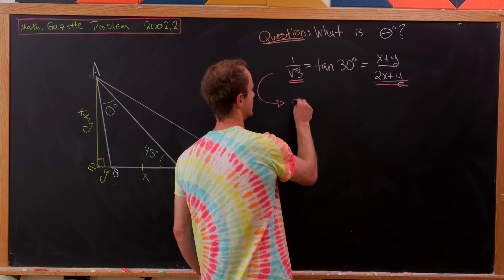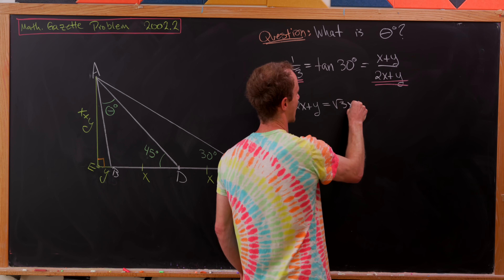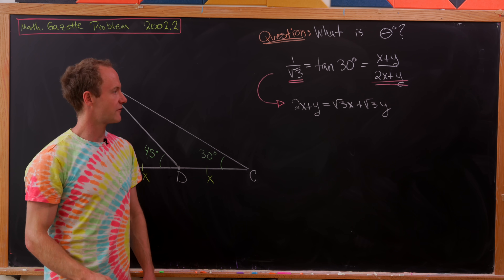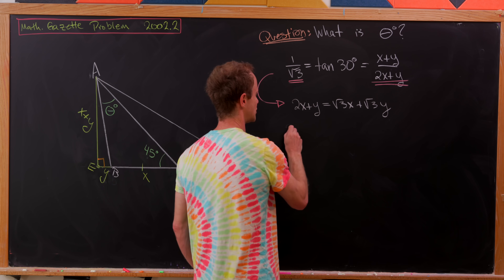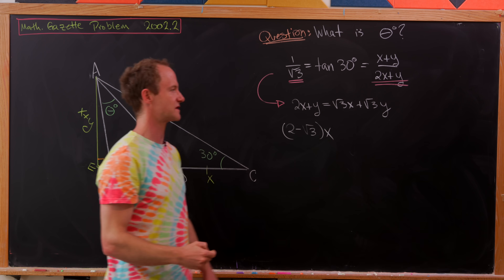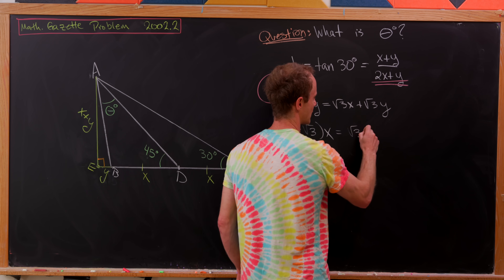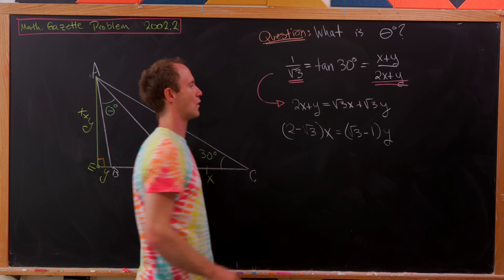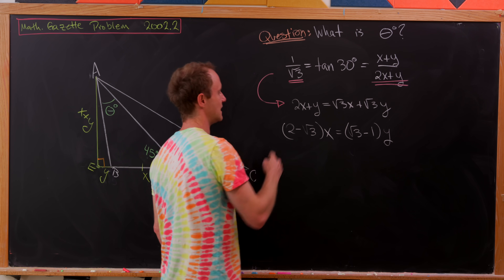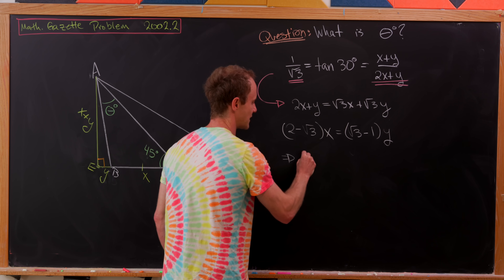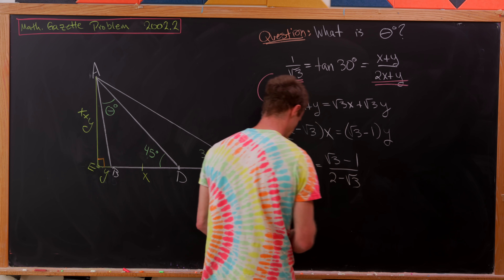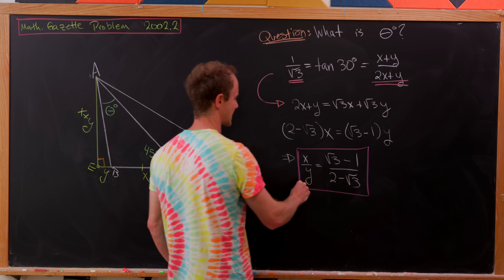Cross-multiplying gives us 2x + y = √3·x + √3·y. Rearranging, (2 − √3)x = (√3 − 1)y. Dividing both sides by y and by (2 − √3) leaves us with x/y = (√3 − 1)/(2 − √3). Let's box that — it's going to be pretty helpful.